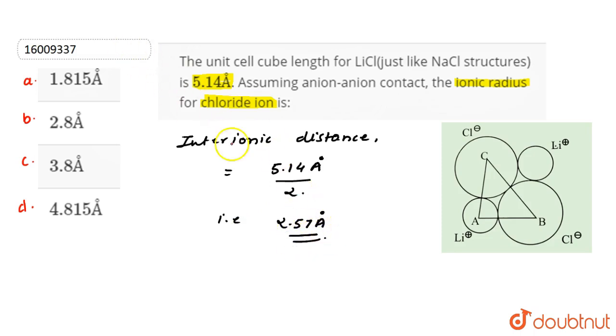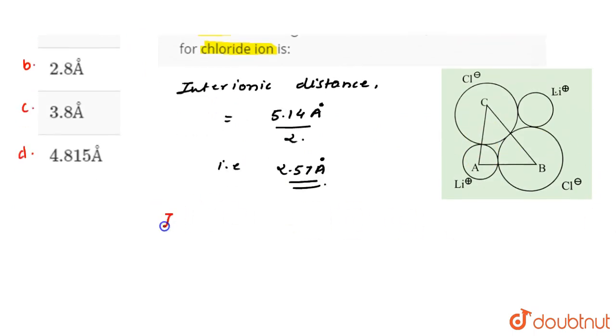Now, if our inter-ionic distance has come, we can consider the triangle, in triangle BAC. So I can take the distance between BAC.